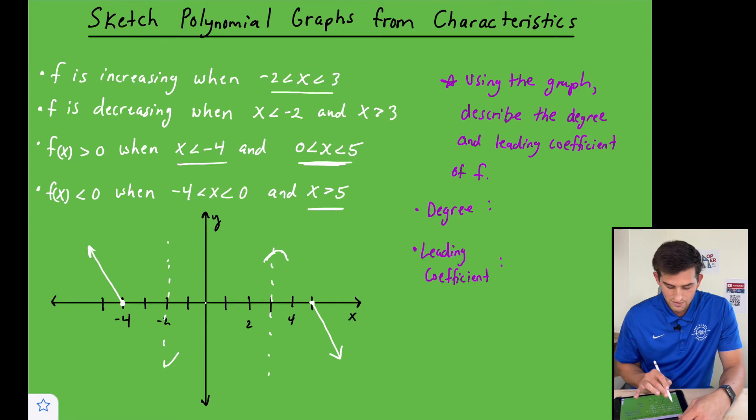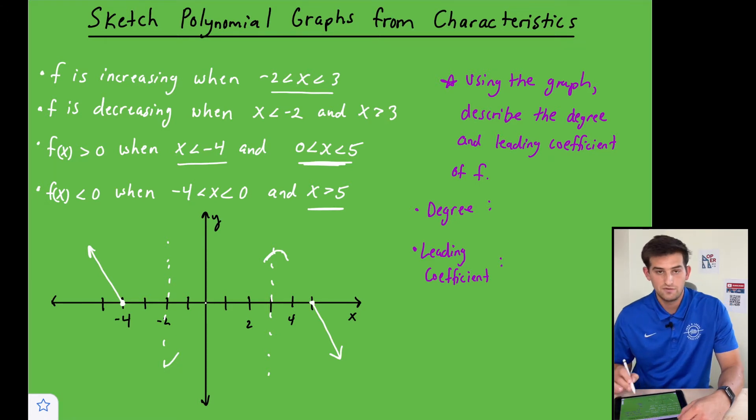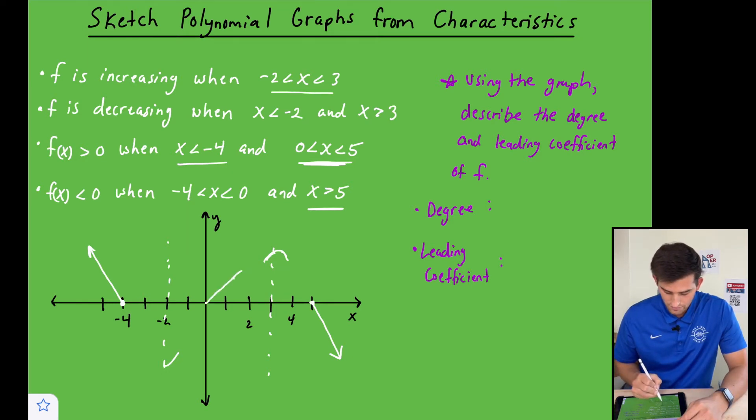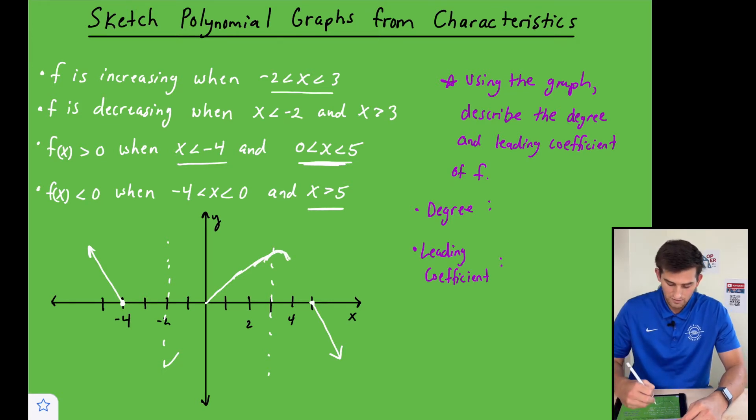It says f of x is greater than zero when x is between zero and five. So that tells us from zero to five on our x-axis, our graph needs to be above the x-axis, right? So here's zero. And let's just connect that to right there. And we know from zero to five it's going to be above. So I can go ahead and draw my curve to right there.